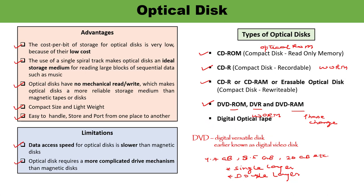One more type is digital optical tape. DVDs — Digital Versatile Discs — are developed for recording movies and can store data very densely, which requires more powerful error correction. That is what digital optical tape refers to. Thank you so much for watching this video.